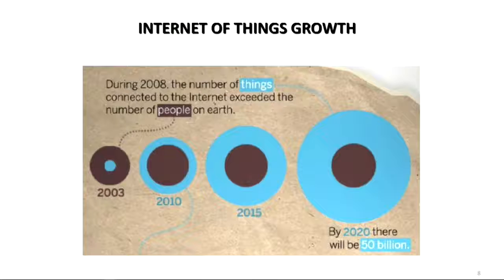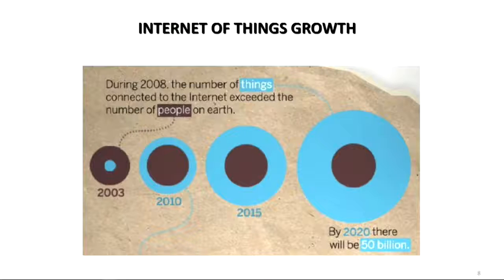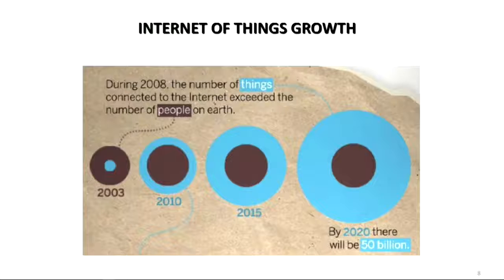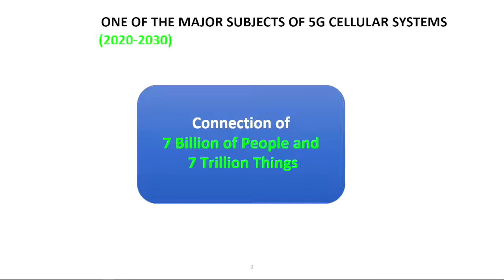During 2008, the number of things connected to the Internet exceeded the number of people on Earth. By 2020 there will be 50 billion connected devices — more things and machines than humans. In 5G, there will be 7 billion people and 7 trillion things connected.